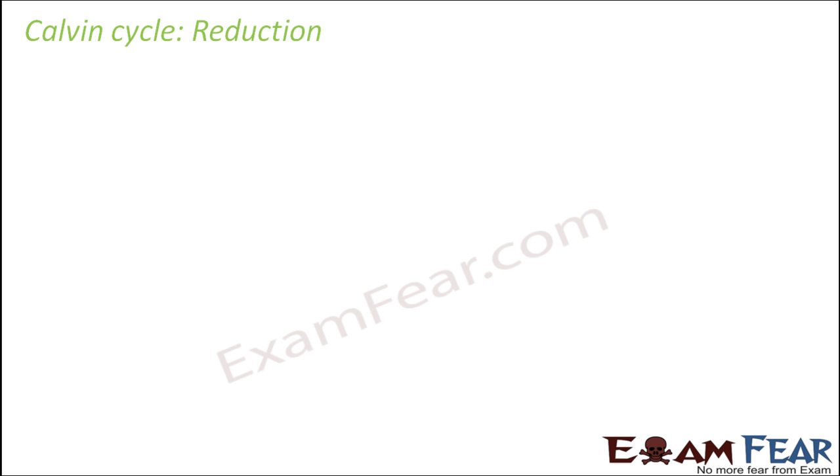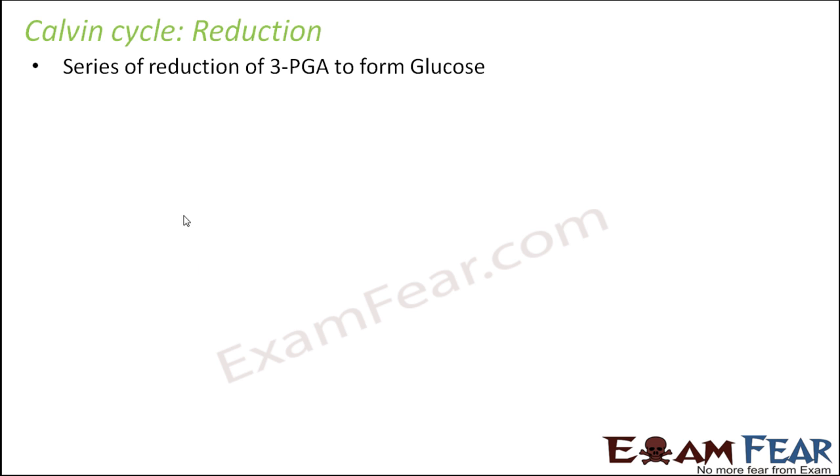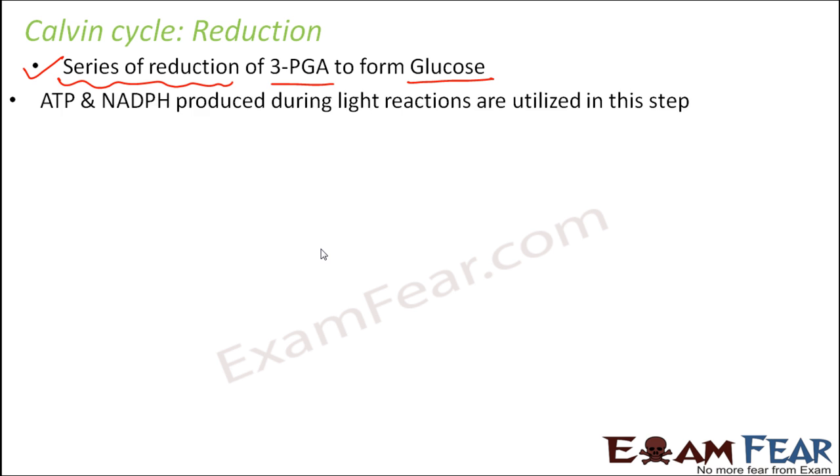So now the next step is reduction. What happens in reduction? The product which was formed in the first step, that is PGA, gets reduced to form glucose. So now we will see how this process takes place. It is not only a one-time reduction but a series of reductions takes place so that 3PGA can form glucose. So let us see how the reduction will happen.